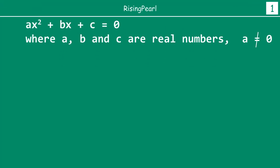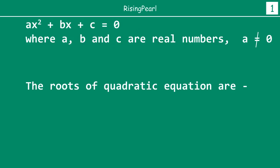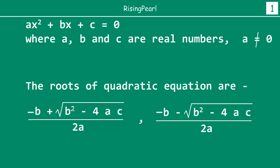Now in the last webisode we saw that if we write a quadratic equation in a standard form — ax squared plus bx plus c equals 0, where a, b, c are real numbers and a not equal to 0 — then we know that the two roots of this quadratic equation are: x equals minus b plus square root of b squared minus 4ac, the entire thing divided by 2a, and the second root is minus b minus square root of b squared minus 4ac divided by 2a.